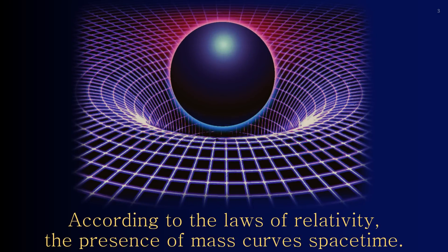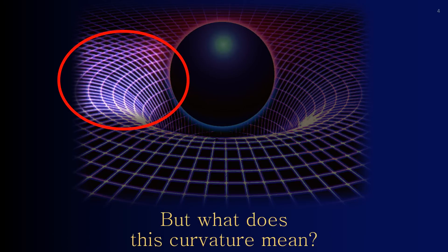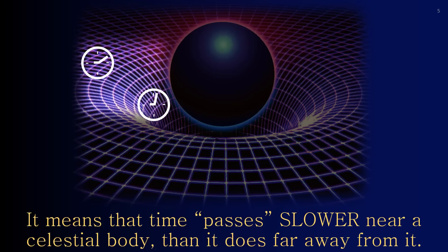According to the laws of relativity, the presence of mass curves spacetime. But what does this curvature mean? It means that time passes slower near a celestial body than it does far away from it.